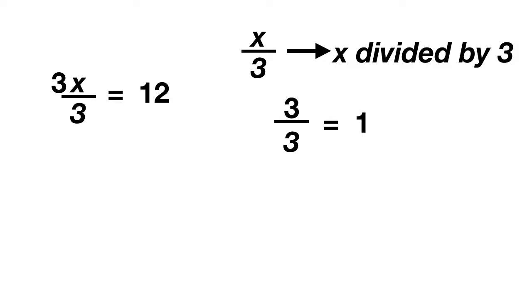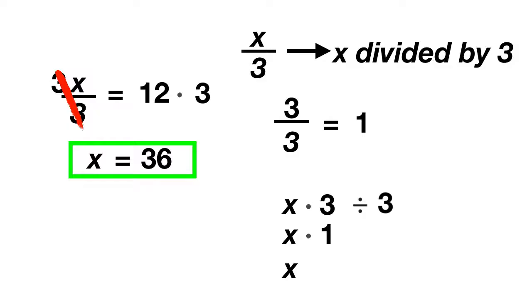The other way to think about it is you have x divided by 3. When you add a times 3 in there, now you end up with 3 divided by 3, which is 1. And x times 1 is just x. So when we multiply by 3, our division cancels out, and we're left with just x. But remember, when we do something to one side of an equation, we have to do it to the other. So we have to multiply the 12 times 3. What is 12 times 3? It's 36. And so here x equals 36.